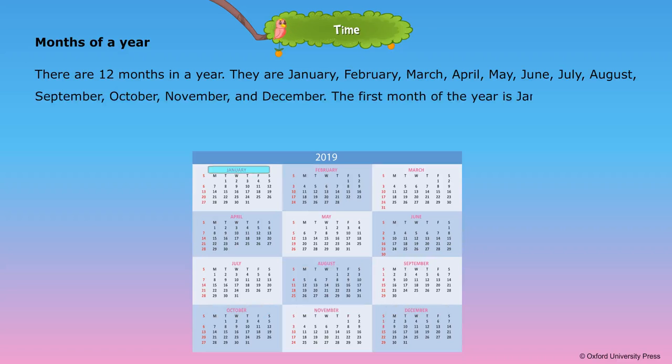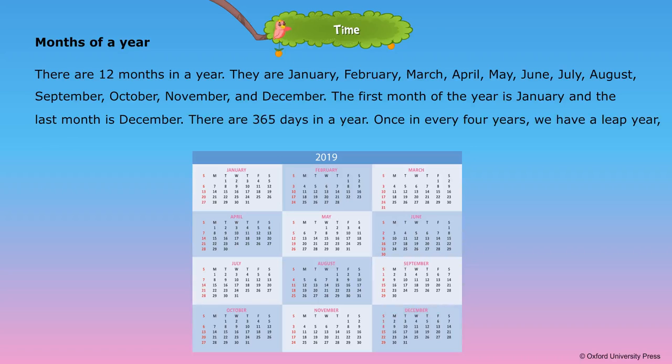The first month of the year is January and the last month is December. There are 365 days in a year. Once in every 4 years, we have a leap year which has 366 days.